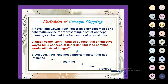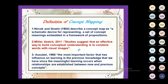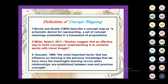The third definition, Ausubel in 1968, states that the most important factor influencing learning is the previous knowledge we have, since meaningful learning occurs when relationships are established between new and previous concepts. So these three definitions — Novak, Miller, and Ausubel — are interlinked. They all explain concept mapping, and together they are really very helpful for us.